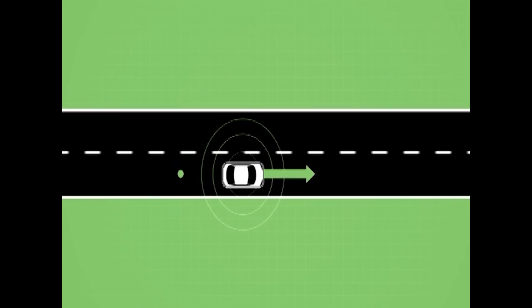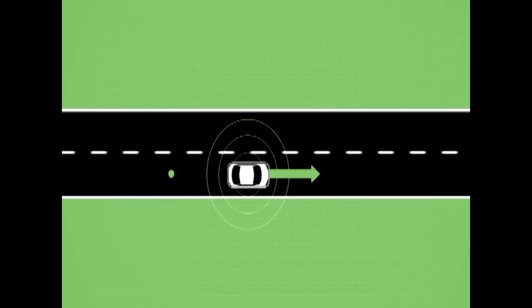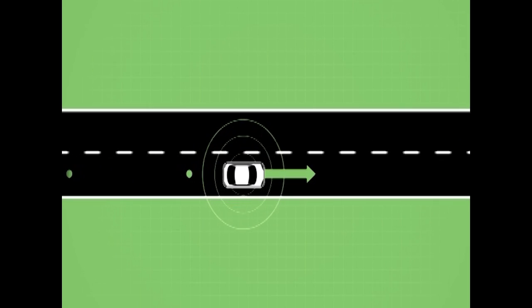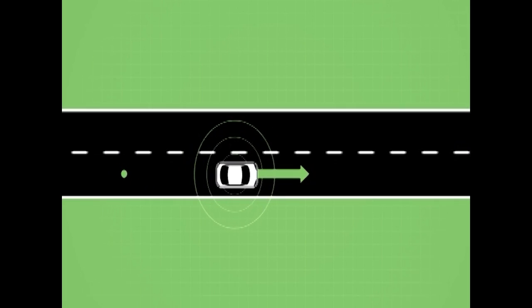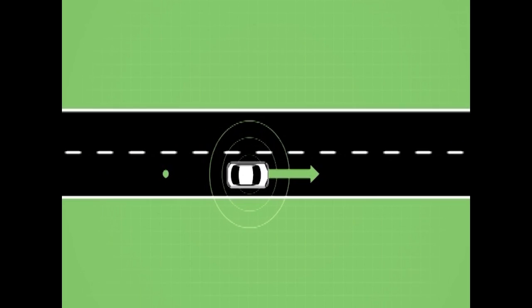With path history and path prediction, the vehicle is essentially being provided with a dynamic map of the roadway geometry ahead. Essential information for performing threat assessment and predicting potential crashes.